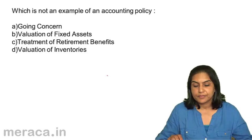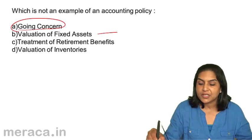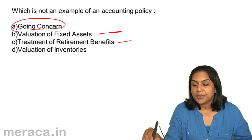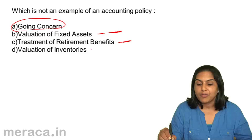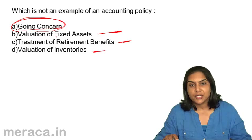The correct answer is A. Going concern is not an example of an accounting policy. Valuation of fixed assets is a policy — you choose whether to value at historical cost or market value. Treatment of retirement benefits and valuation of inventory are both policies where you adopt one method from several available. But going concern is a basic accounting concept which assumes the business will exist for a long period of time — that is not an accounting policy.